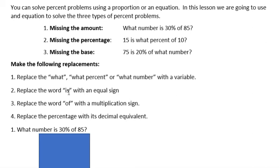Then you're going to replace the word is with an equal sign. So in each of these statements you can see there is the word is. That's your equal sign. And replace the word of with a multiplication sign, which you can see the word of is also in all three of those statements.